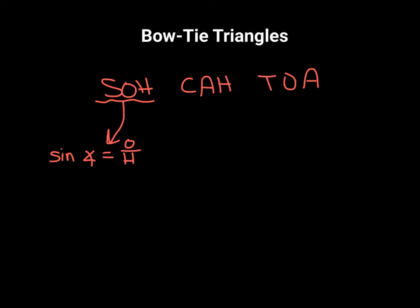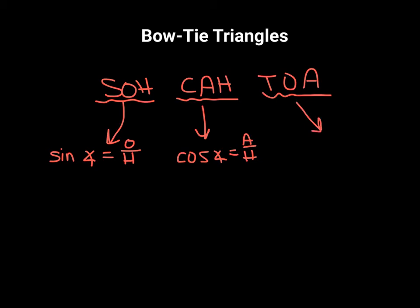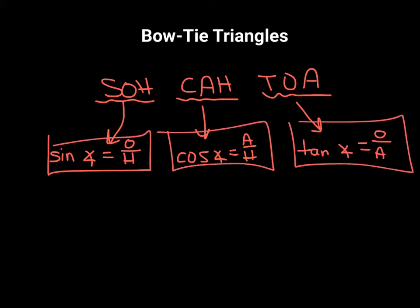If we look at the next part, CAH: C stands for cosine, A stands for adjacent, and H stands for hypotenuse. So cosine of our angle equals adjacent over hypotenuse. And then finally TOA tells us that tangent of our angle is equal to opposite over adjacent. We're going to use these three formulas to help us with the examples on the next few pages.